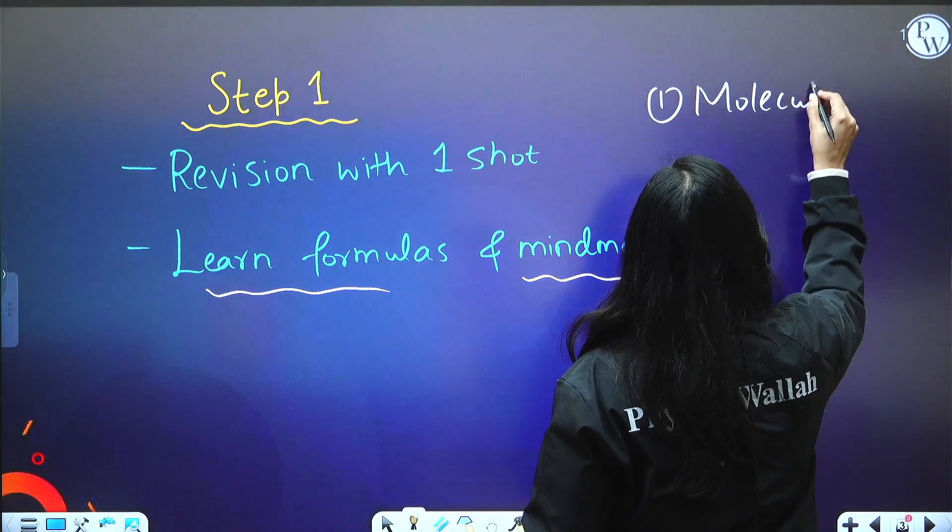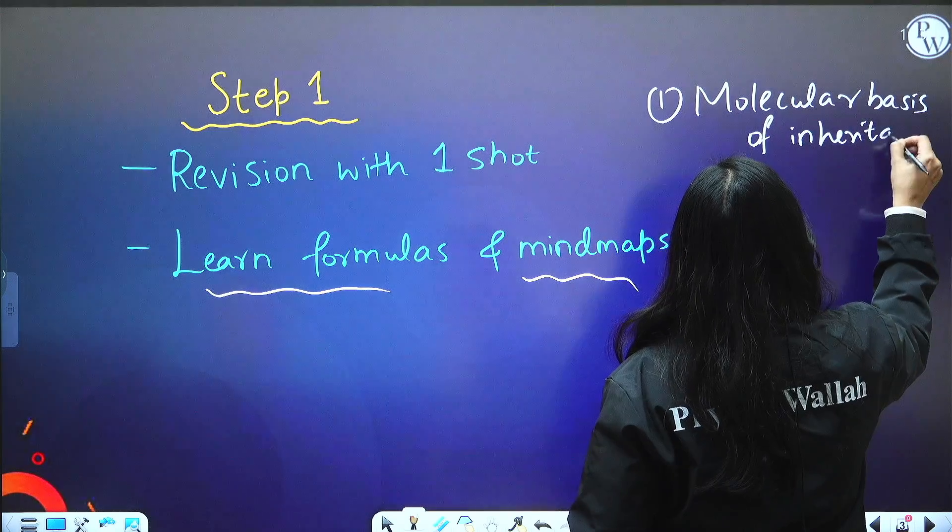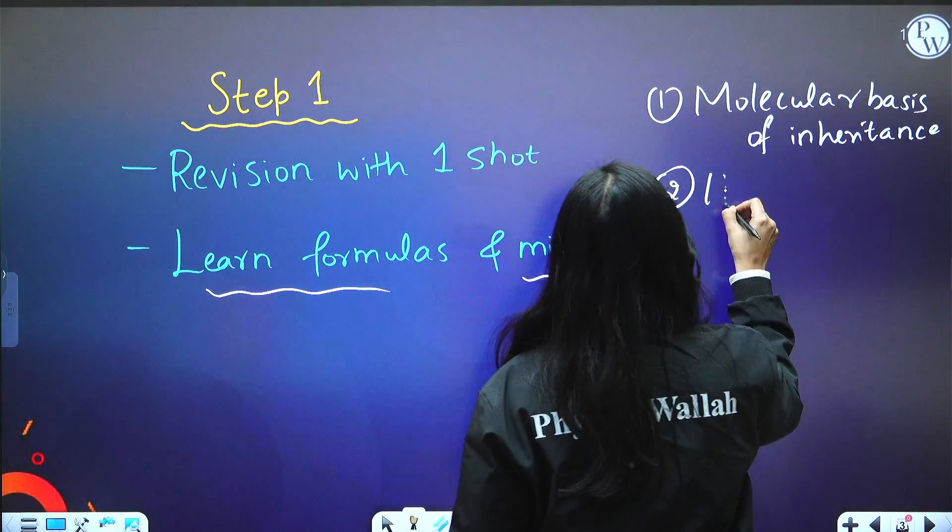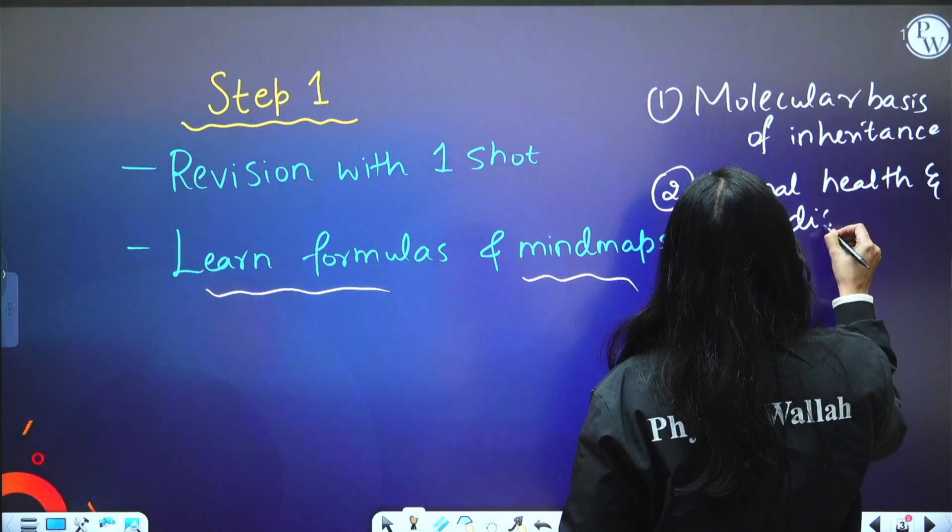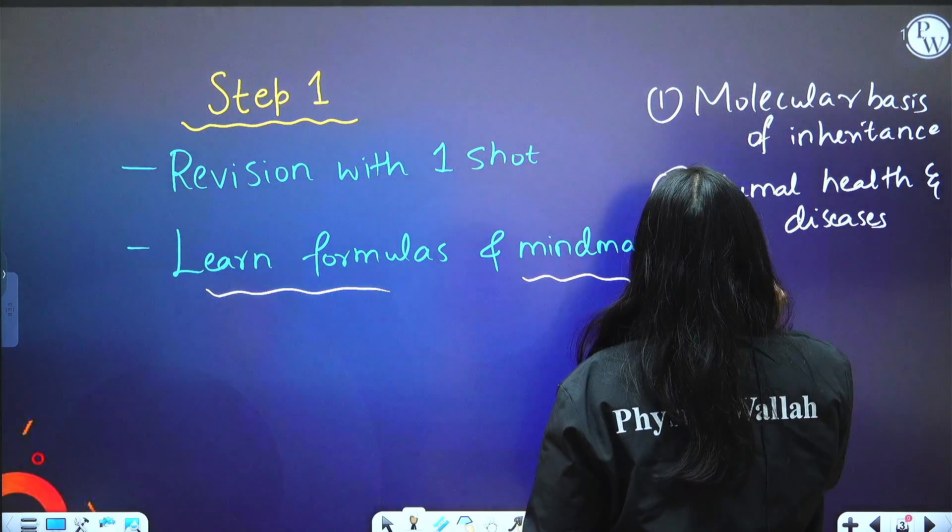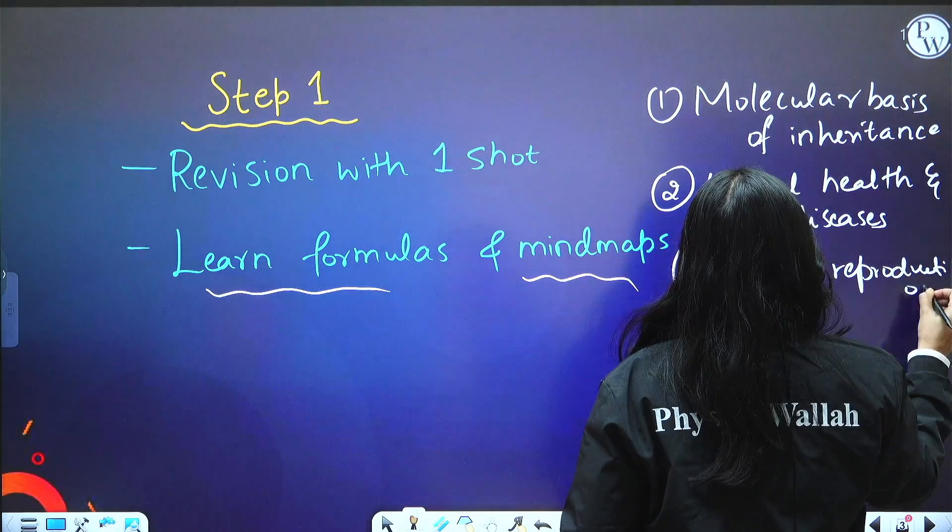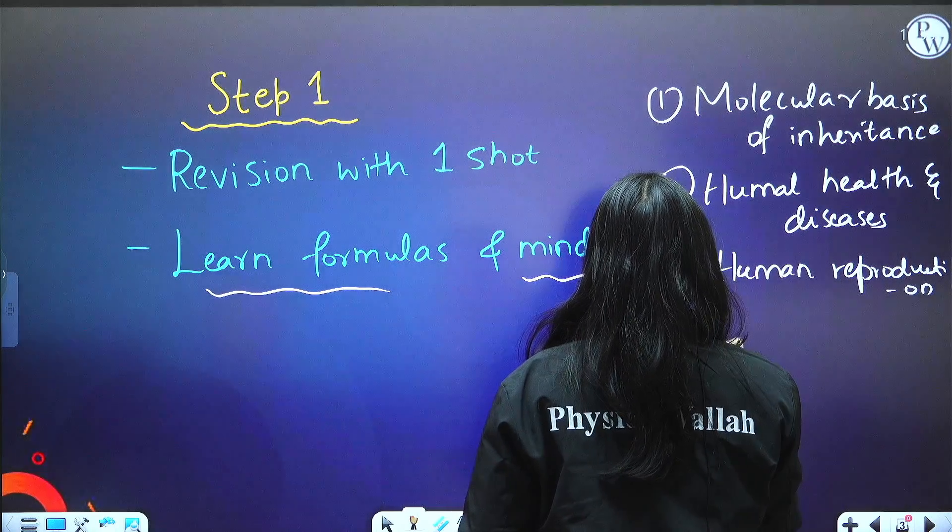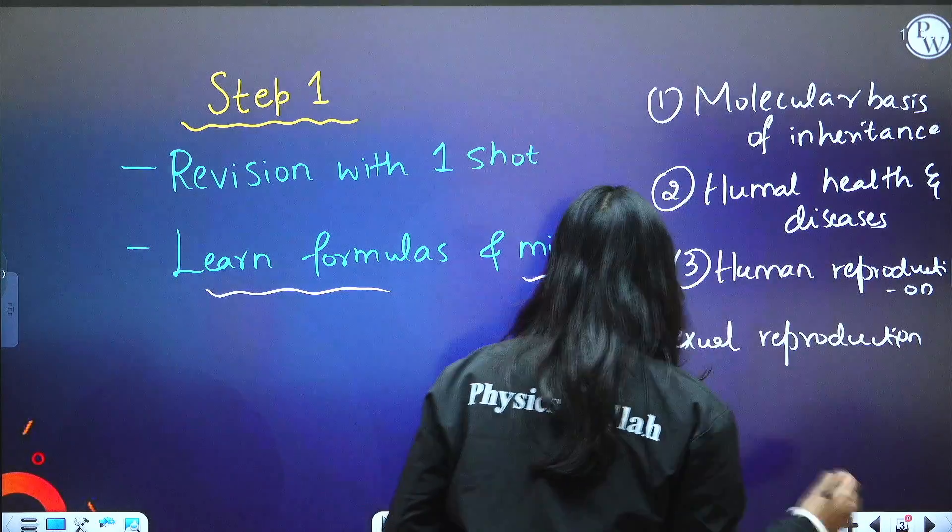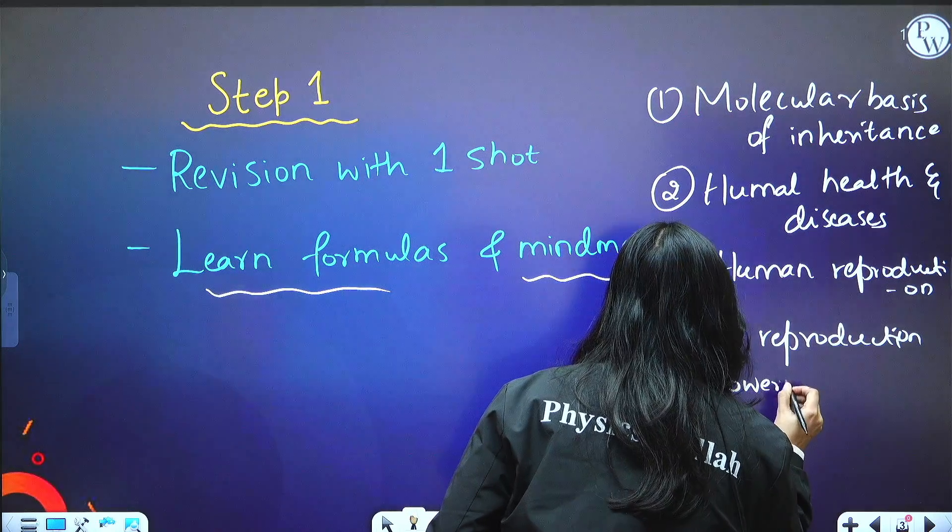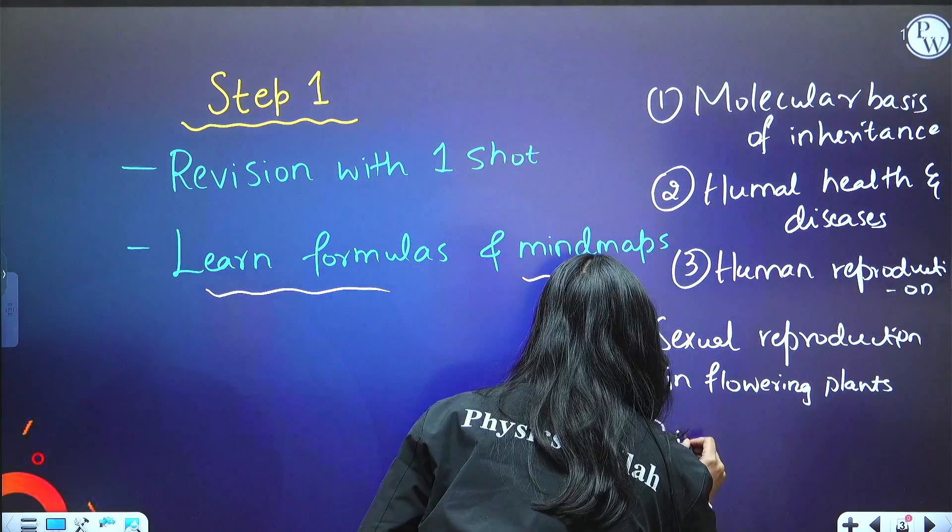The first is Molecular Basis of Inheritance - high-weighted chapter. Next is Human Health and Diseases. Then you have Human Reproduction. The next chapter is Sexual Reproduction in Flowering Plants. And the last important chapter is Principles of Inheritance and Variation.